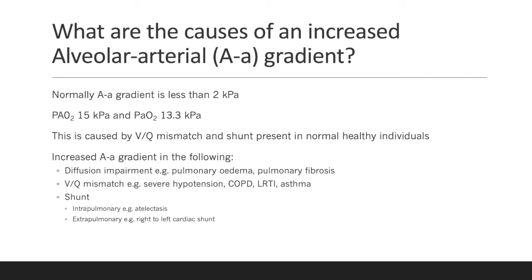What are the causes of an increased alveolar arterial gradient? As we said before, normally the alveolar arterial gradient is less than 2 kPa. The partial pressure of oxygen in the alveolus is 15 kPa, and in the artery is 13.3 kPa. In healthy individuals, this small difference is caused by VQ mismatch and physiological shunt.